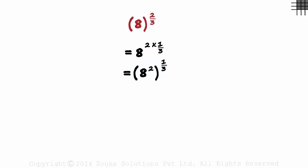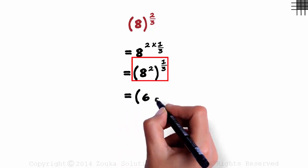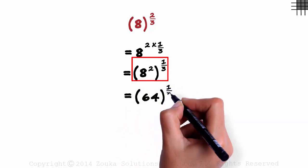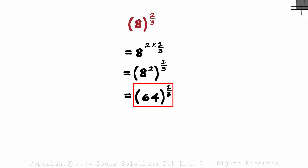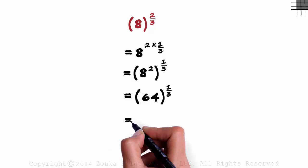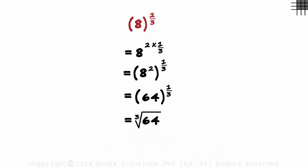As 8 squared is 64, this will equal 64 raised to 1 by 3. And guess what this is? This is in the A raised to 1 by N form. This is the cube root of 64 and that is 4. This weird looking number was reduced to an integer using two basic concepts we learned.